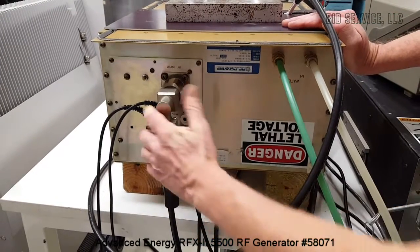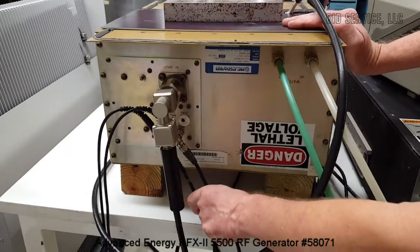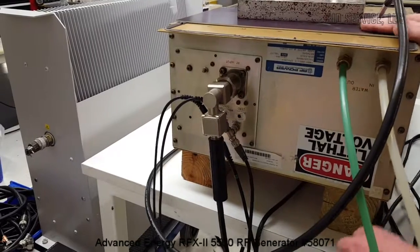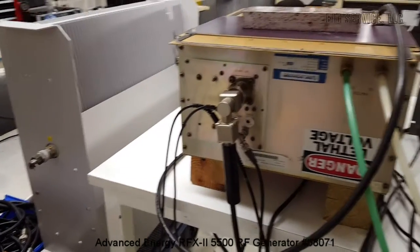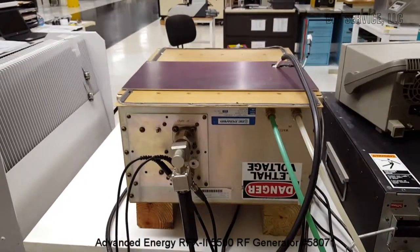Here is the RF input and these two B and C lines are for reading both the phase and magnitude, which sends a signal back to our controller so it can match. The unit is presently not on, so I'll show you inside.